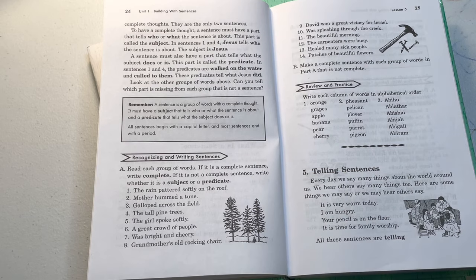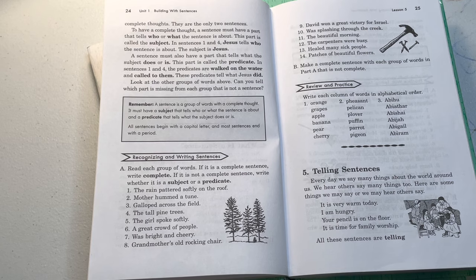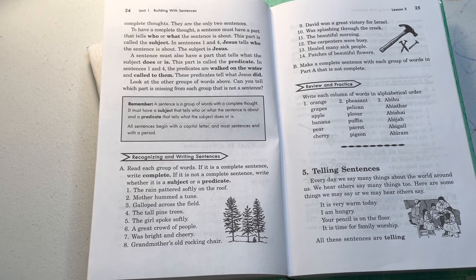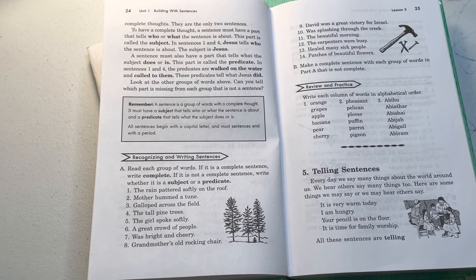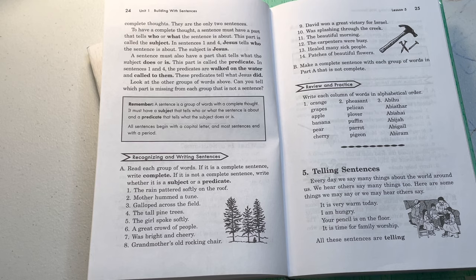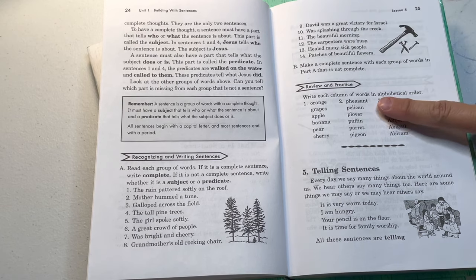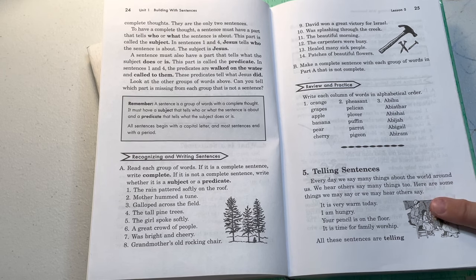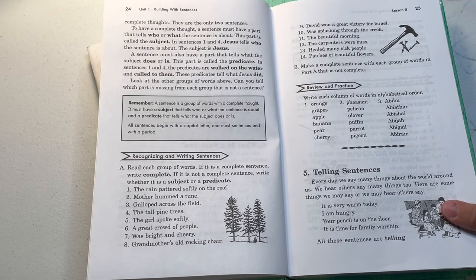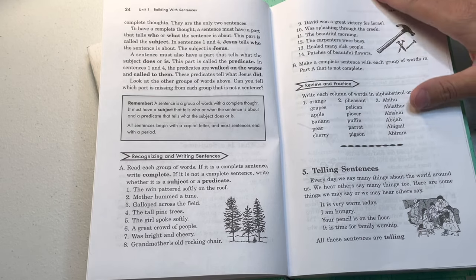Recognizing and writing sentences. Read each group of words. If it is a complete sentence, write complete. If it is not a complete sentence, write whether it is a subject or a predicate. The rain pattered softly on the roof. Mother hummed a tune, galloped across the field, the tall pine trees. So you get it. And then they have more questions here. And then write each column of words in alphabetical order. And they talk about telling sentences. Every day we say many things about the world around us. We hear others say many things too.